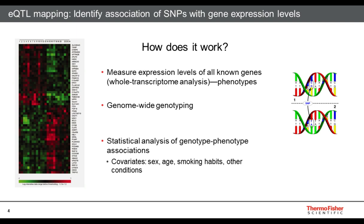On slide four, it is summarized how we carried out this study. We measured the expression levels of all known genes — we carried out a whole transcriptome analysis — and these are the phenotypes of our study. We also carried out genome-wide genotyping. We then put together the phenotype with the genotype; in other words, we carried out statistical analysis of genotype-phenotype associations. This was done for each SNP and each target gene, making it a matrix analysis. We also used covariates that may affect transcription levels of genes.